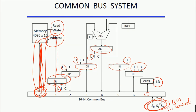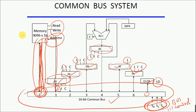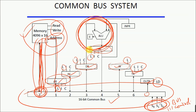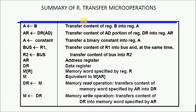So far we have covered the structure of individual registers, implemented the main common bus system, and implemented the memory. Next we will move to the ALU — the arithmetic logic unit. After hardware implementation of the ALU, we will discuss the instruction set and how instructions are executed.